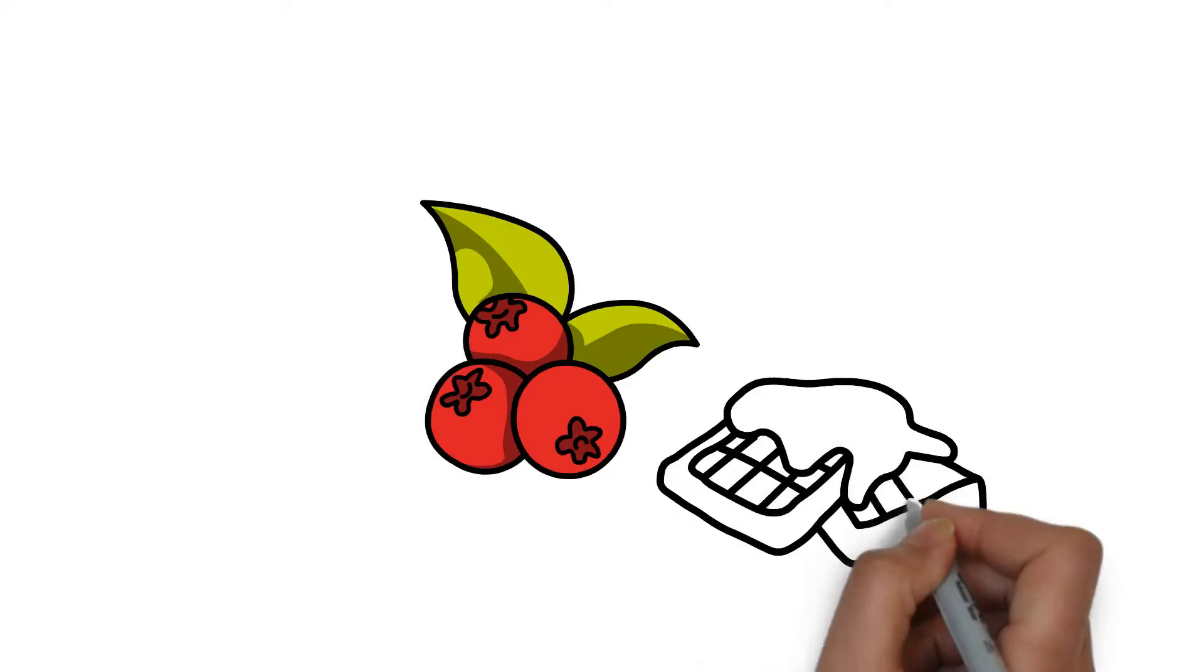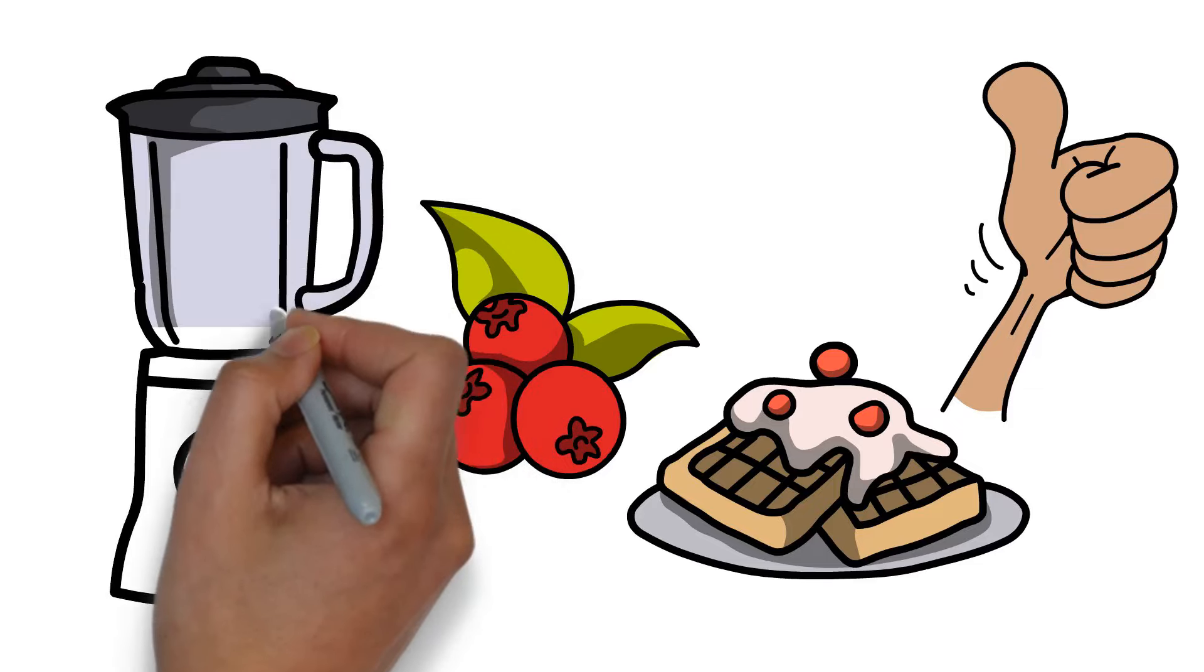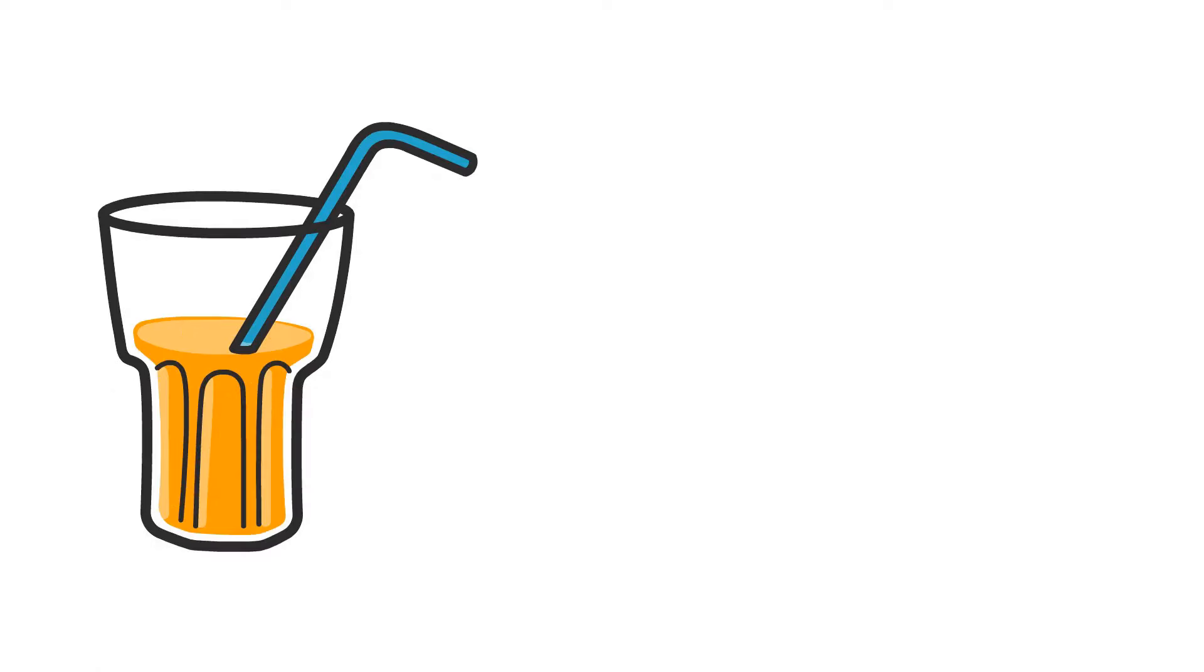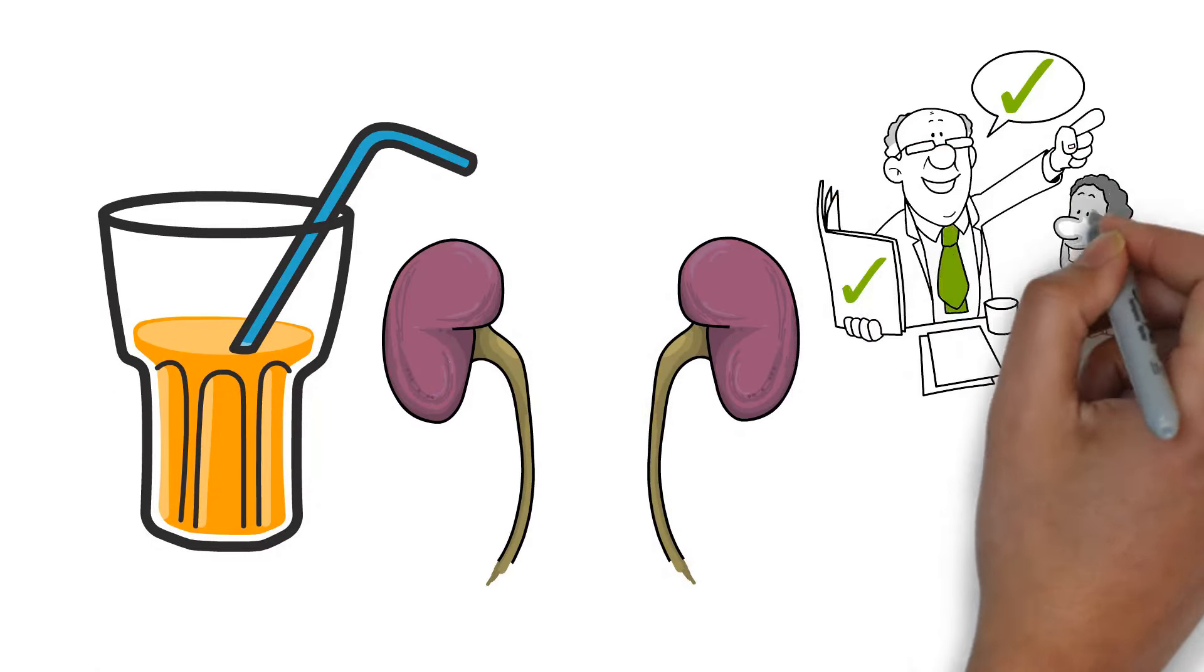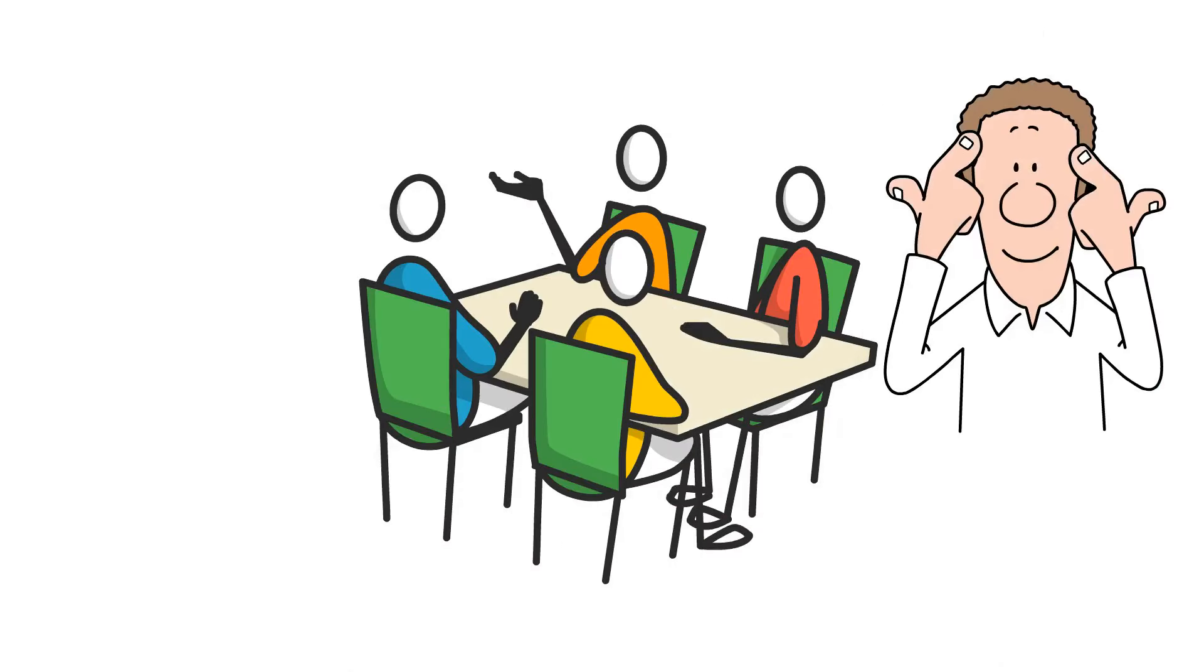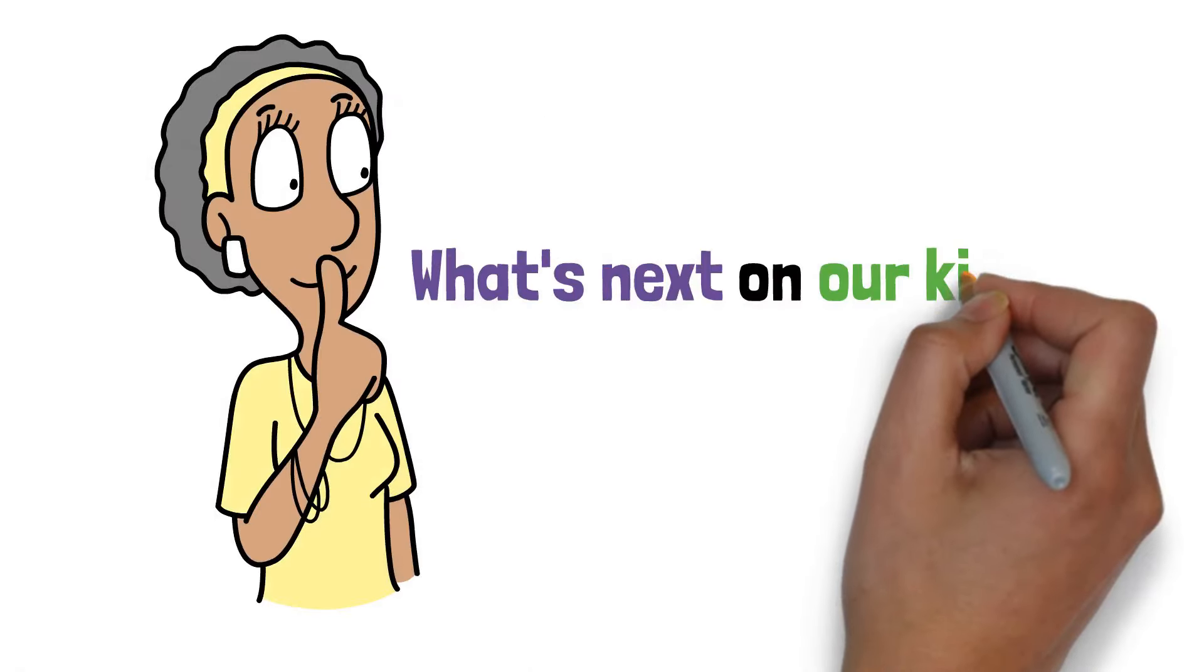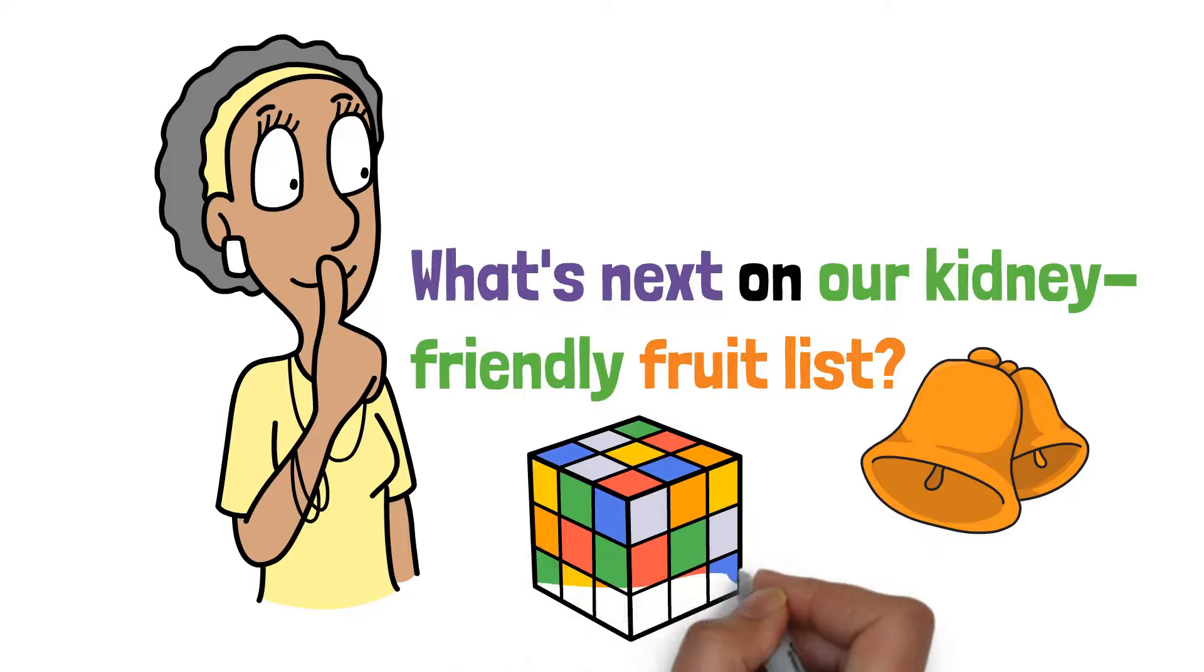Integrating cranberries into your diet isn't just easy, it's delicious. Whether you're tossing them into a morning smoothie, sprinkling dried cranberries over your salad, or sipping on some unsweetened cranberry juice, you're giving your kidneys the support they need to keep doing their job effectively. As we wrap up our cranberry chat, remember these berries are more than just a tasty treat, they're a kidneys ally. Curious about what's next on our kidney friendly fruit list? Stay tuned, it's a citrusy game changer.